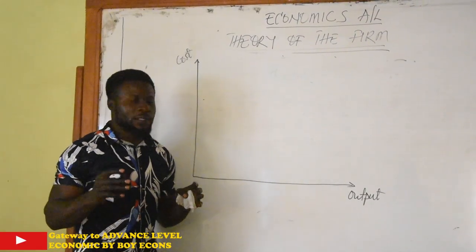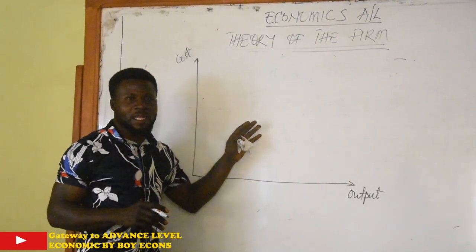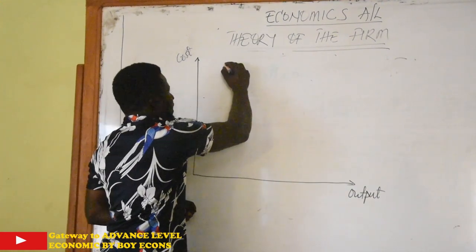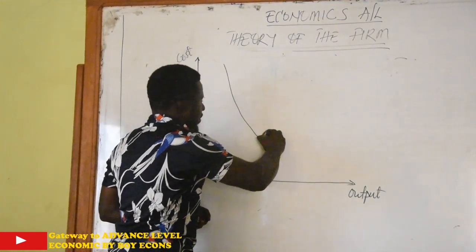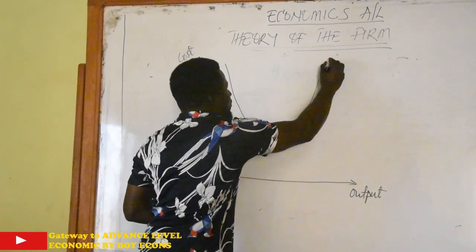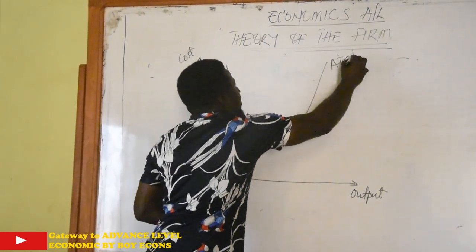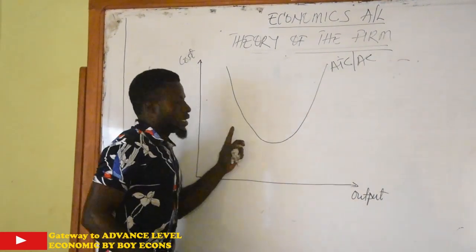So we want to draw the marginal cost curve together with the average total cost curve. We know that we already saw our average total cost having a U-shape. Average total cost, or we call it average cost, it has a U-shape.